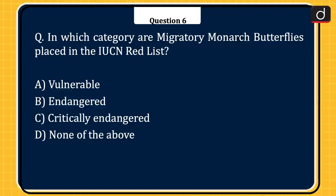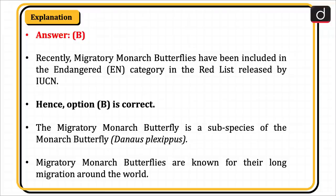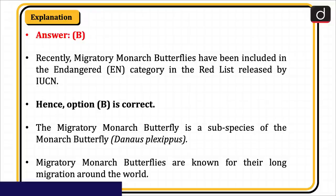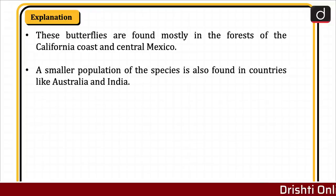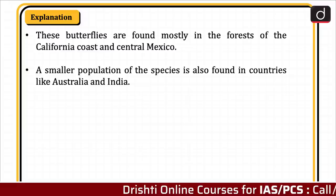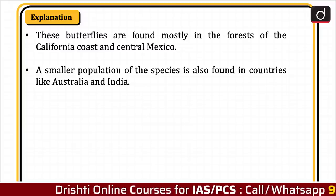Next question: in which category are migratory monarch butterflies placed in the IUCN Red List? Vulnerable, endangered, critically endangered, or none of the above? The correct answer is option B, endangered. Recently, migratory monarch butterflies have been included in the endangered (EN) category in the Red List released by IUCN. The migratory monarch butterfly is a subspecies of the monarch butterfly (Danos plexippus). These butterflies are known for their long migration and are found mostly in forests of the California coast and central Mexico, with a smaller population in countries like Australia and India.